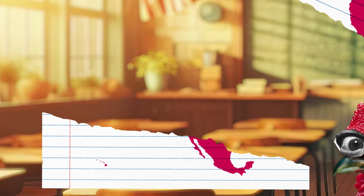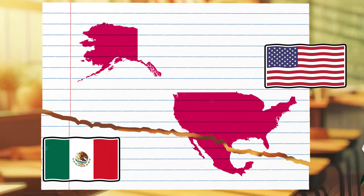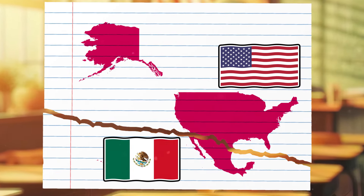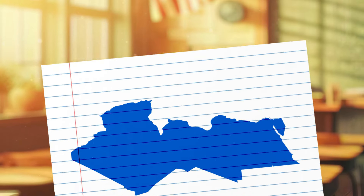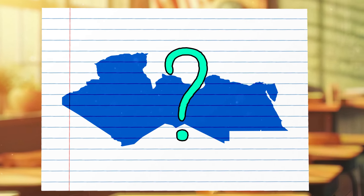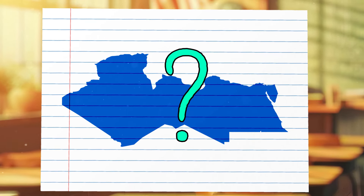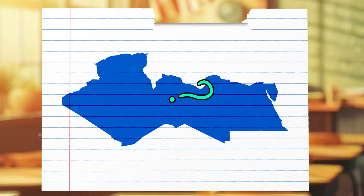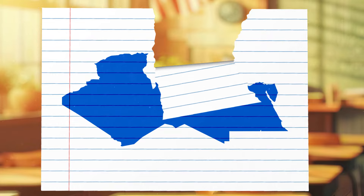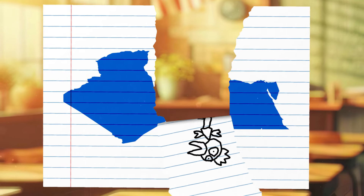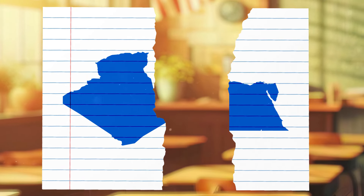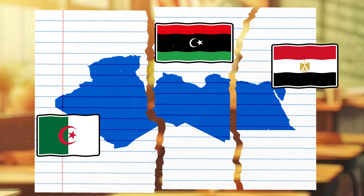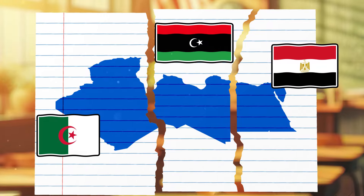Our first alliance – the United States and Mexico. The next union of countries is Algeria, Libya and Egypt.